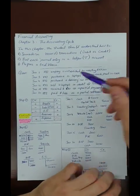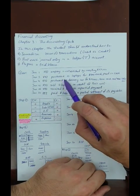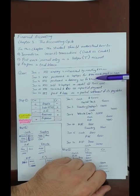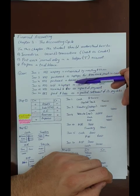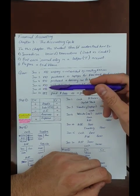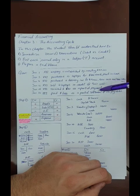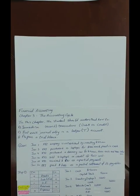The example: on Jan 1, XYZ Company is established by investing $50,000. On Jan 3, XYZ purchased 10 laptops for $400 each, paid in cash. Jan 4, the company purchased a delivery car for $10,000 — $6,000 paid in cash and $4,000 to be paid later. On Jan 10, the company sold four laptops on credit at their cost. On Jan 15, the company received $600 as a partial payment from the Jan 10 sale. On Jan 20, the company paid $2,000 as a partial settlement of its payables.